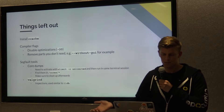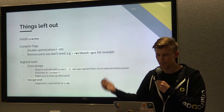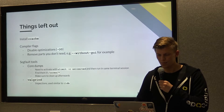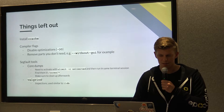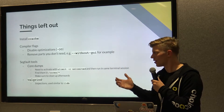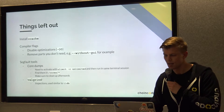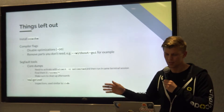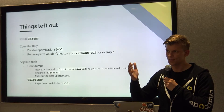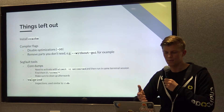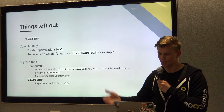Some things left out but worth mentioning: install ccache and remove unneeded compiler components like the GUI if you're not a GUI developer. Also disable compiler optimizations so symbol names aren't stripped — otherwise you can't see anything meaningful in the debugger. Segfault tools are also left out as a separate category. The focus here was on things that help beginners explore the codebase and understand what's happening, not necessarily chase big bugs.